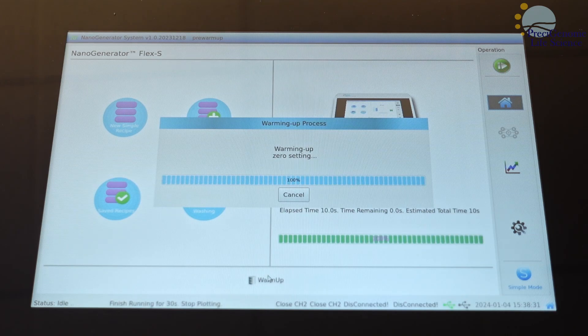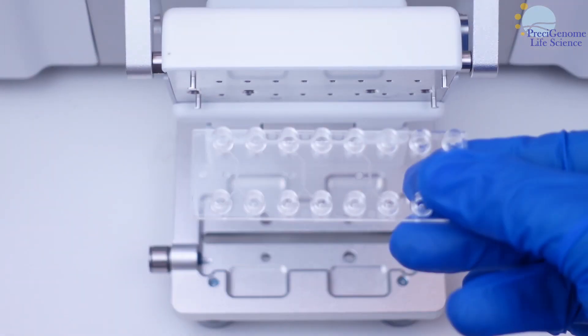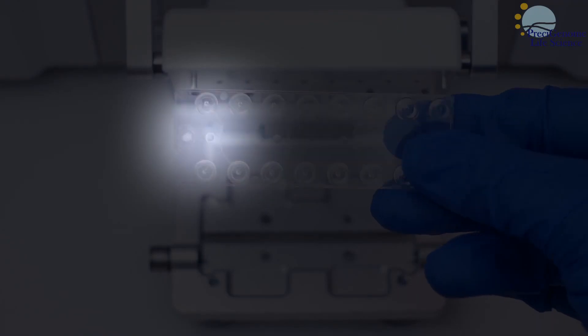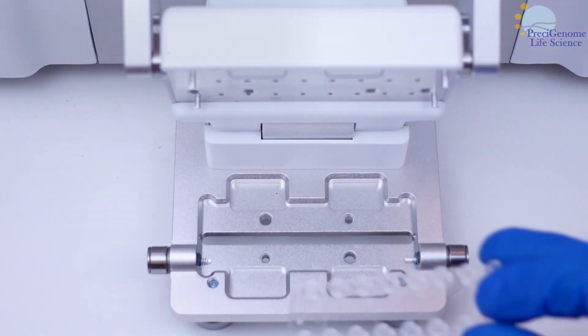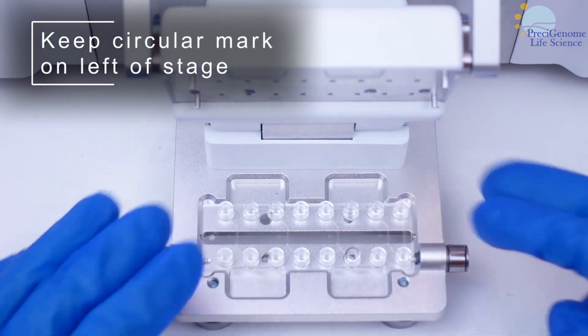starting with the mixing chip. The Mix 4 chip has a circular mark on one side to help you orient it on the stage. As you insert the chip, ensure the mark is on the left-hand side of the setup.